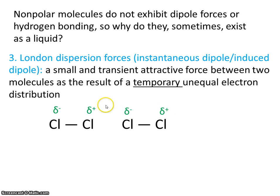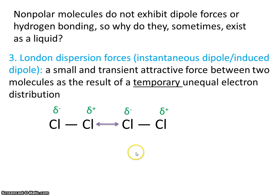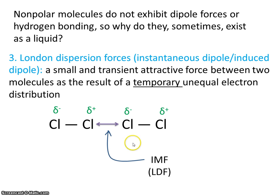So now, just for a moment, we have one chlorine that's positive and one chlorine that's negative. We already know that opposites attract, so this is an intermolecular force — an attraction between molecules — and it's known as a London dispersion force.